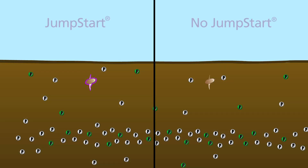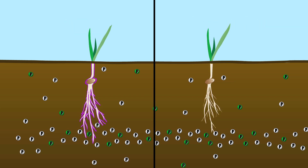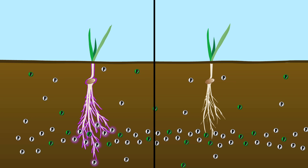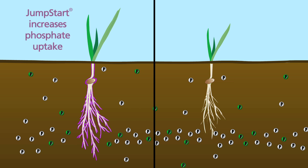The seed on the left has been treated with JumpStart. As the roots grow, the JumpStart fungus grows along the roots and secretes compounds that release the bound phosphate so it can be taken up by the plant. The result? More soil and fertilizer phosphate is available for plant uptake, for more vigorous crops with higher yields.